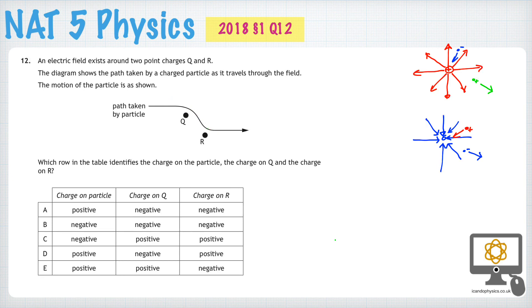Let's imagine that our charged particle is actually positive. If that were the case, then if it's attracted to this particle, that must mean that this particle is negative. And if it's repelled away from R, then R must be positive.